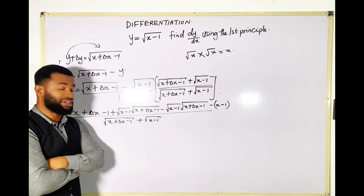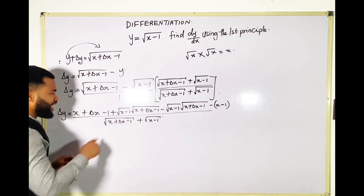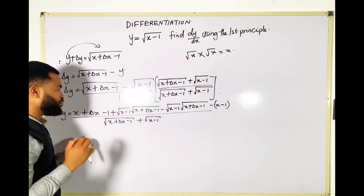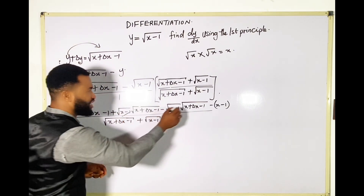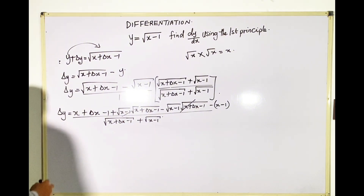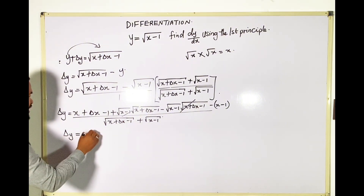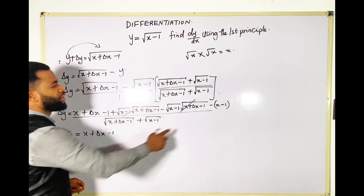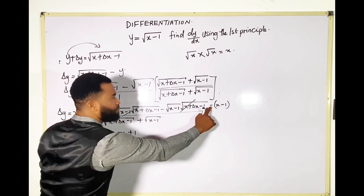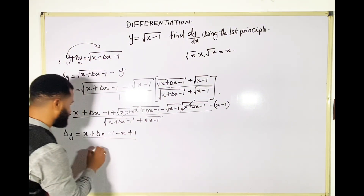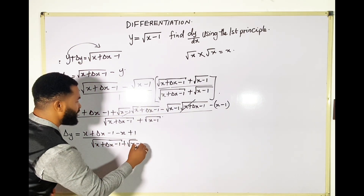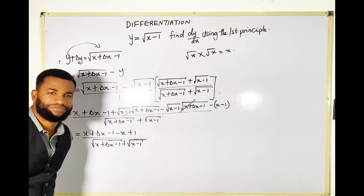Now it's getting very interesting. If you look at this, I have this same expression and this expression subtracting each other — whenever something appears with plus and minus it means they cancel to zero. So those two middle terms are zero. I now have Δy equal to (x + Δx − 1) minus (−x + 1), because minus times minus one is plus, all over root (x + Δx − 1) plus root (x − 1).